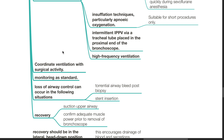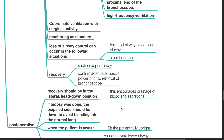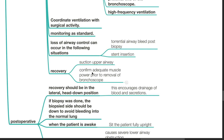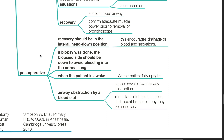Monitoring as standard. Loss of airway control can occur with torrential airway bleeding post-biopsy and stent insertion. Recovery: suction the upper airway and confirm adequate muscle power prior to removal of the bronchoscope. Post-operative management: recovery should be in the lateral head-down position to encourage drainage of blood and secretions. If biopsy was done, the biopsied site should be down to avoid bleeding into the normal lung. When the patient is awake, sit fully upright. Airway obstruction by a blood clot causes severe lower airway obstruction; immediate intubation, suction, and repeat bronchoscopy may be necessary.